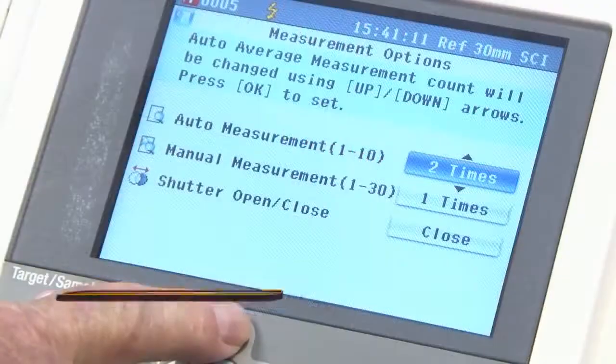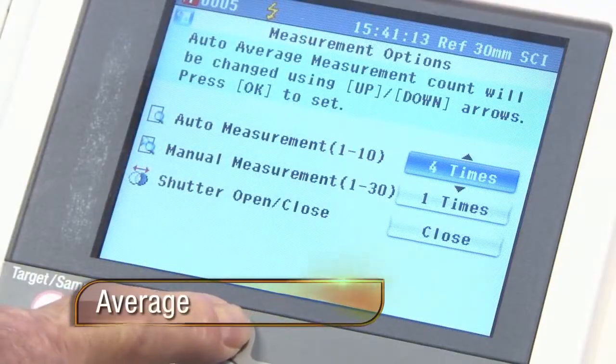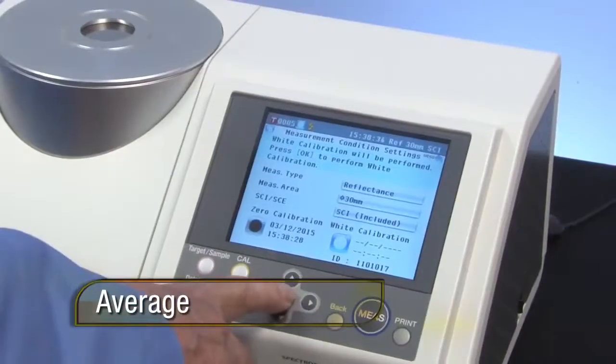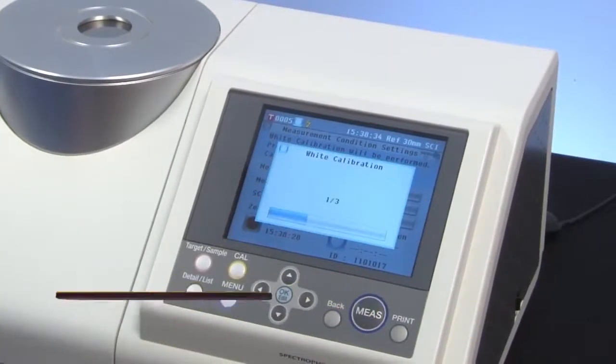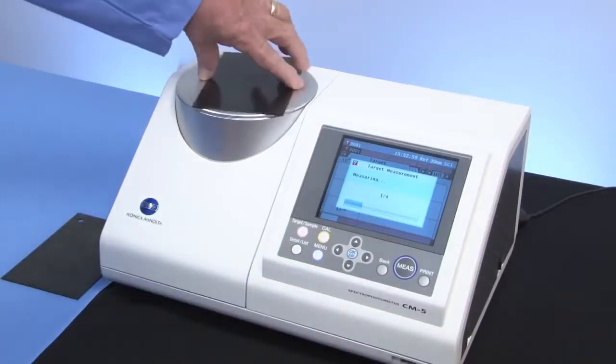The CM5 has an average measurement mode for textured materials. Calibrate, set the auto measurement, turn the sample while automatic measurements are being taken. This setting is also used with color difference.